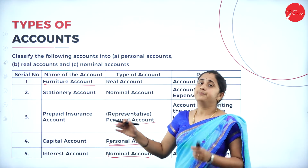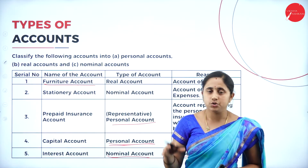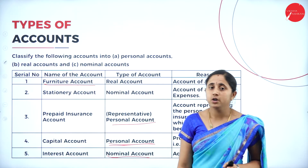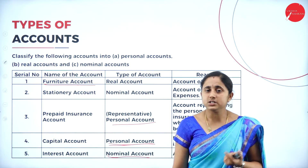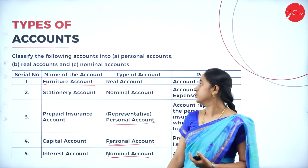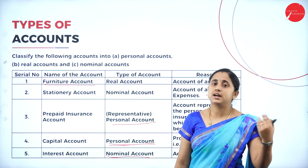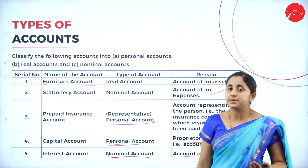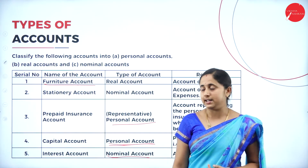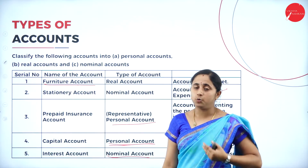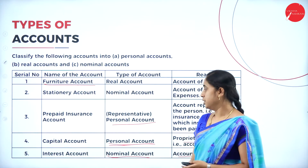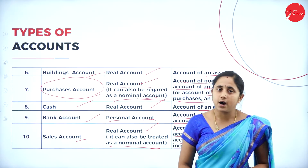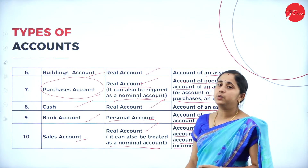So all these are examples for personal, real, and nominal accounts. In a similar way, you should be able to identify all transactions and accounts. If given a furniture account, you say furniture is an asset — real account. Stationery is an expense — nominal account. Prepaid insurance is a representative person — personal account. Capital is also a representative person — personal account. You should be able to identify all accounts and transactions. This is all about types of account.